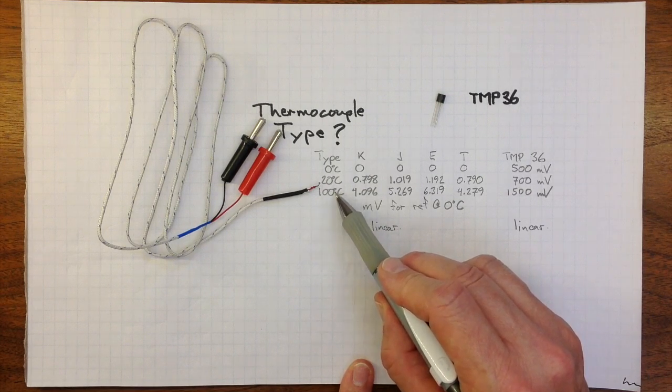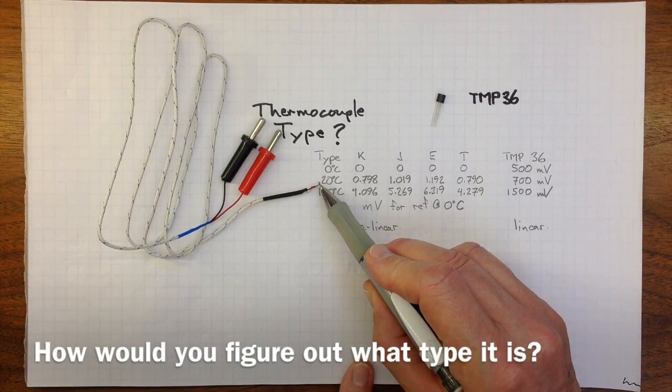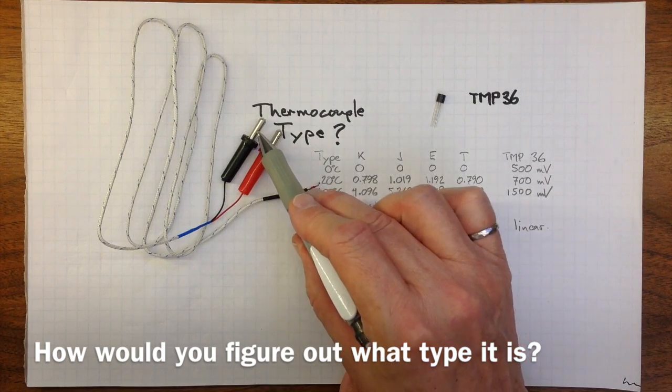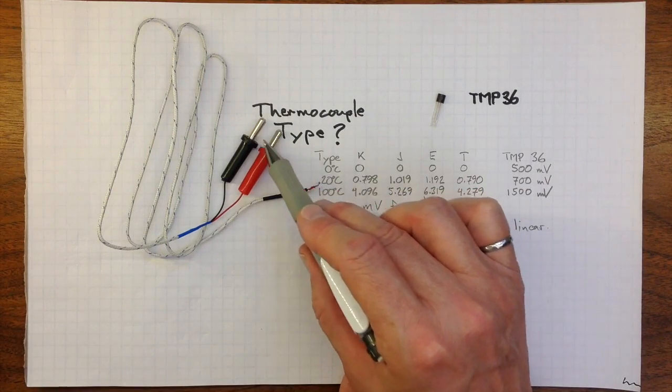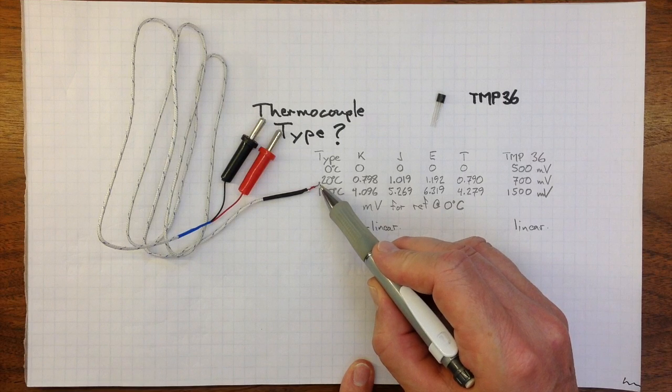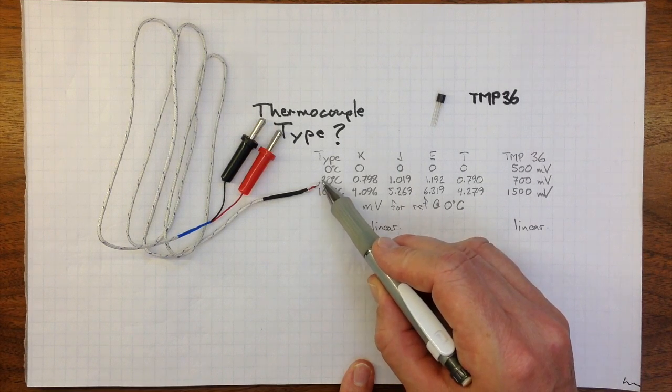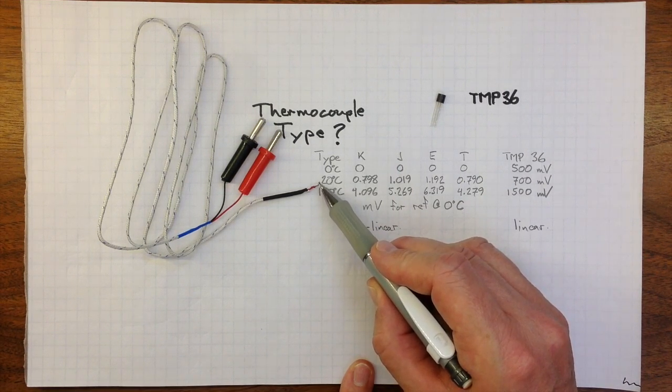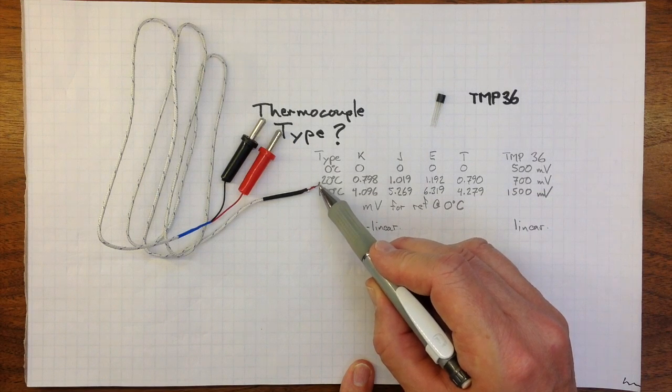The key thing here is it's the temperature of the bead that determines what the voltage is that we'll see on those two wires there. So it's not the temperature of the air around the bead, it's the temperature of the actual junction, the temperature of the actual transducer.